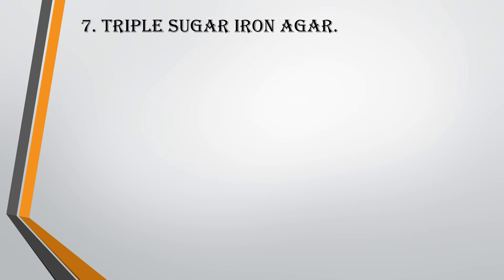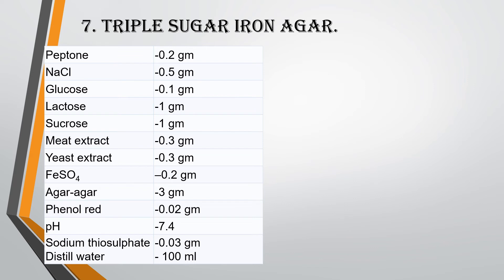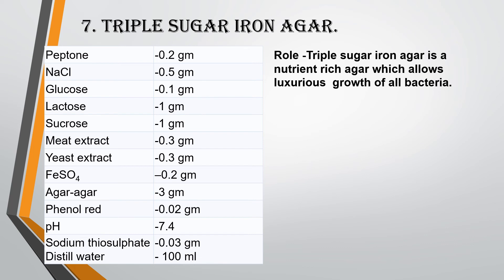The seventh medium is Triple Sugar Iron Agar. Components for 100 ml are: Peptone 0.2 g, NaCl 0.5 g, Glucose 0.1 g, Lactose 1 g, Sucrose 1 g, Meat Extract 0.3 g, Yeast Extract 0.3 g, FeSO4 0.2 g, Agar Agar 3 g, Phenol Red 0.02 g, pH 7.4, and Sodium Thiosulfate 0.03 g. Triple Sugar Iron Agar is a nutrient-rich agar containing peptone, glucose, lactose, sucrose, meat extract, and yeast extract. It allows luxuriant growth of all bacteria and is suitable for general bacterial growth.